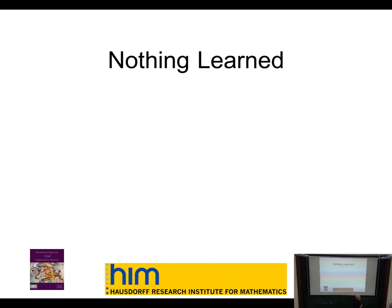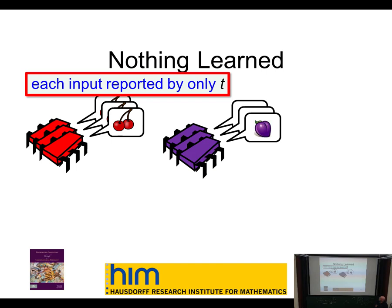Generalizing: what do I need in order to learn at least one valid input? This seems like a very simple question. If each input that I see is reported by only t processes, then I can't accept any one of them — I know that of these two one has to be valid because there are only t bad guys, but I don't know which one it is, so I can't pick either one.